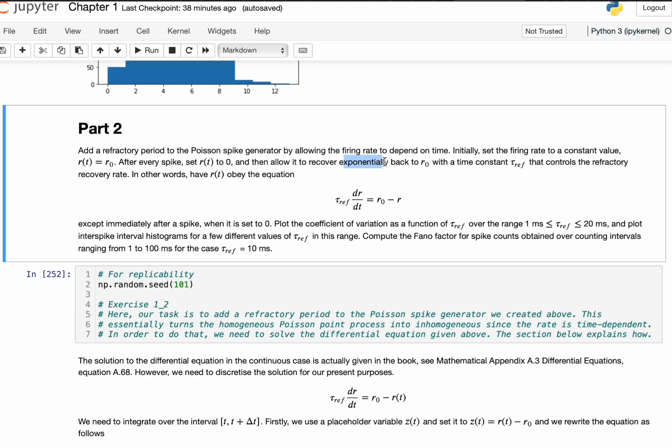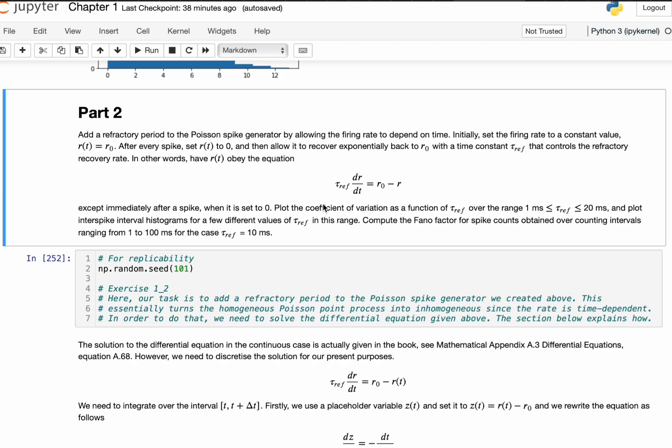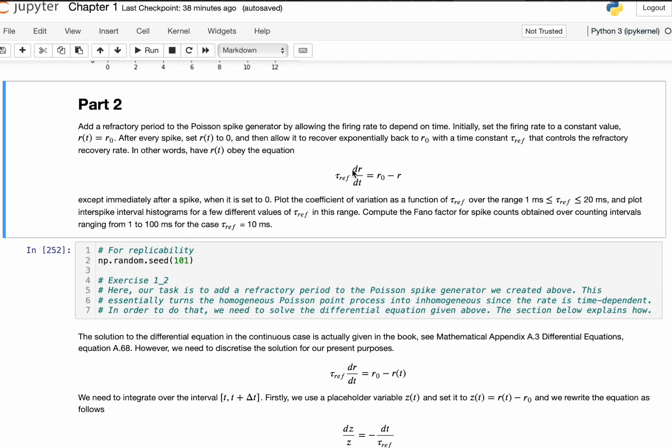And this refractory period is best modeled to be exponential, as in the value of the firing rate relaxes exponentially back to the initial firing rate, which was 100 hertz. So it will go like 100 hertz and then drop down to zero, and then it will exponentially relax towards the 100 hertz again. It is given by this equation here, with this tau, which essentially just describes how quickly it will relax towards that steady state value.